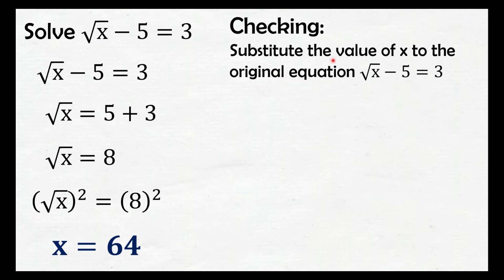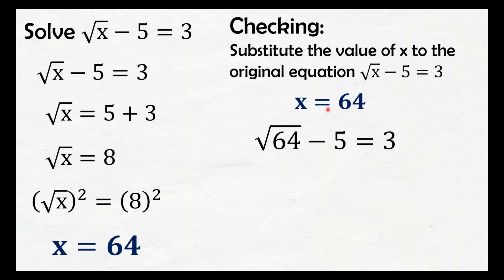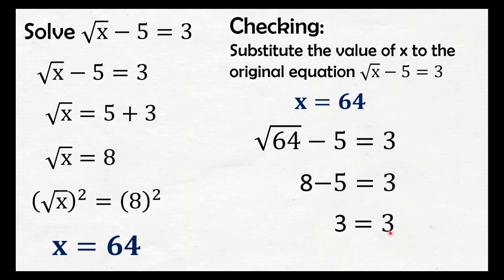I-check natin — substitute the value of x to the original equation, square root of x minus 5 equals 3. Substitute natin si 64 sa x: square root of 64 is 8. So, we have 8 minus 5, and 8 minus 5, that is 3. So, 3 equals 3. Ibig sabihin nyan, itong 64 ay solution doon sa original radical equation natin.